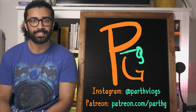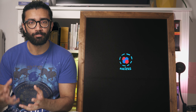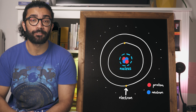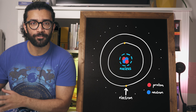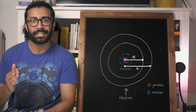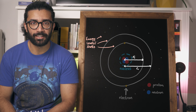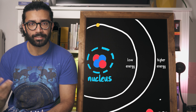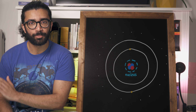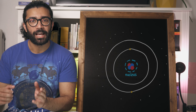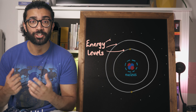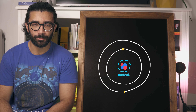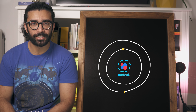Many of you might be familiar with the idea that an atom consists of a nucleus made up of protons and neutrons, and then electrons can be found around this nucleus at very specific distances away from the nucleus. These distances correspond to the energy that a particular electron has within an atom. The nearer the electron is to the nucleus, the lower its energy. We refer to each one of these allowed positions for electrons as energy levels, but in this video we'll also be calling them shells.